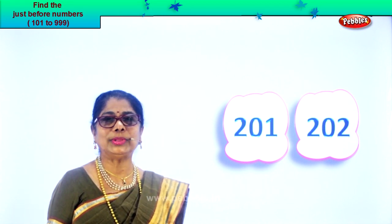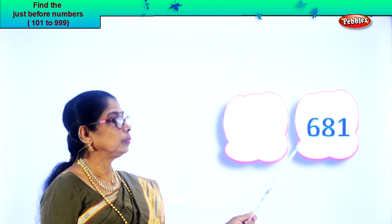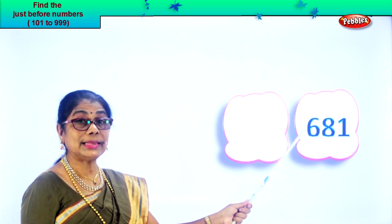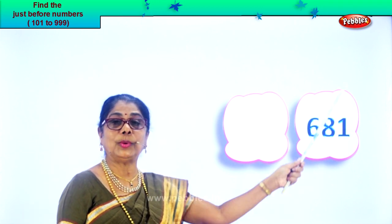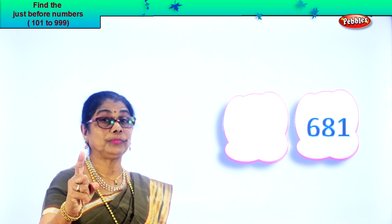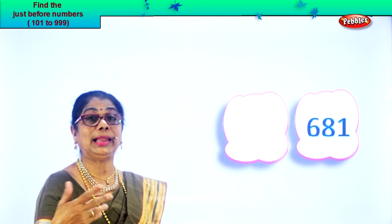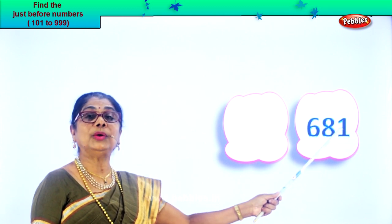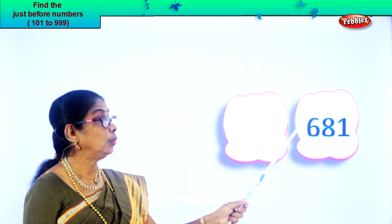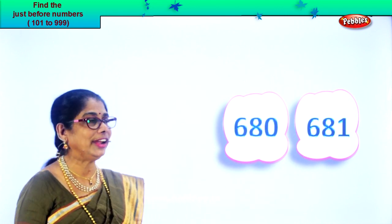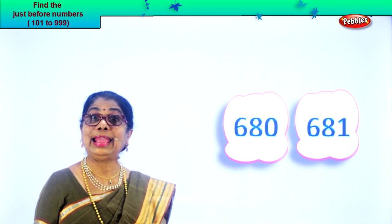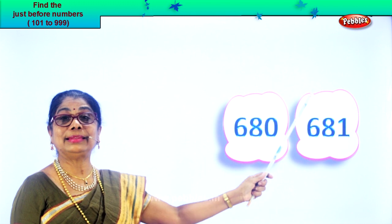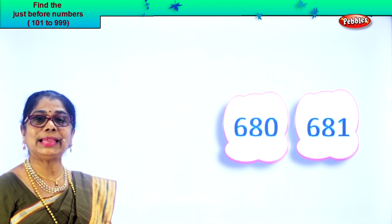We have six in the hundreds place, eight in the tens, and one in the ones place. Read: six hundred and eighty-one. Let's take the ones place — that is one. In the tens you have eight, so you have eighty-one. One less than eighty-one is eighty. The number before is six hundred and eighty. Six hundred and eighty, six hundred and eighty-one. Look at the ones place first, then the tens place, and you get the number before.